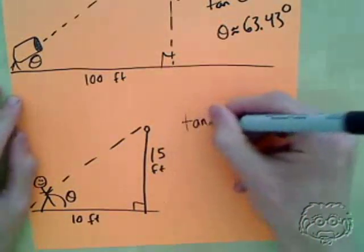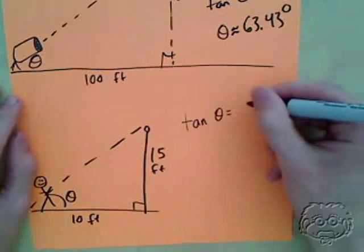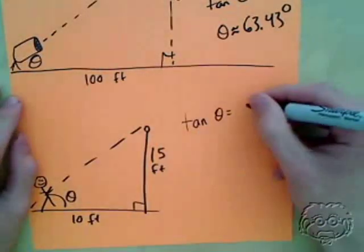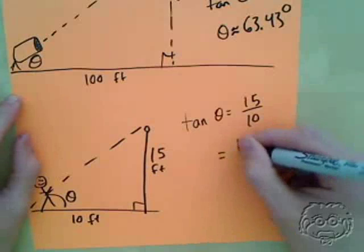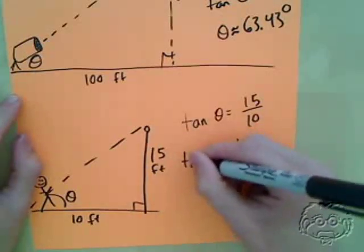So, again, I would use the tangent function. I'd say tangent of theta equals opposite over adjacent, which is 15 over 10, which is 1.5.